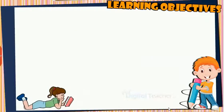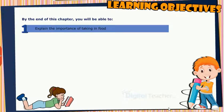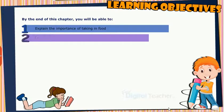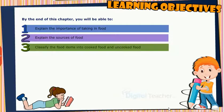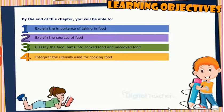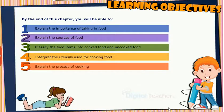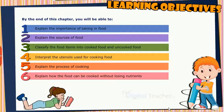Learning Objectives. By the end of this chapter, you will be able to: explain the importance of taking in food, explain the sources of food, classify food items into cooked food and uncooked food, interpret the utensils used for cooking food, explain the process of cooking, and explain how food can be cooked without losing nutrients.